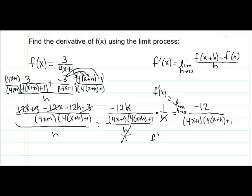So that's going to now give me negative 12 on the top. And on the bottom I've got 4x plus 1. Here that h becomes 0 so that's just x. So I have another 4x plus 1. And we can finally simplify that by multiplying those and using exponents. So our final answer is negative 12 over 4x plus 1 quantity squared. And that answer there is the derivative of our original function.